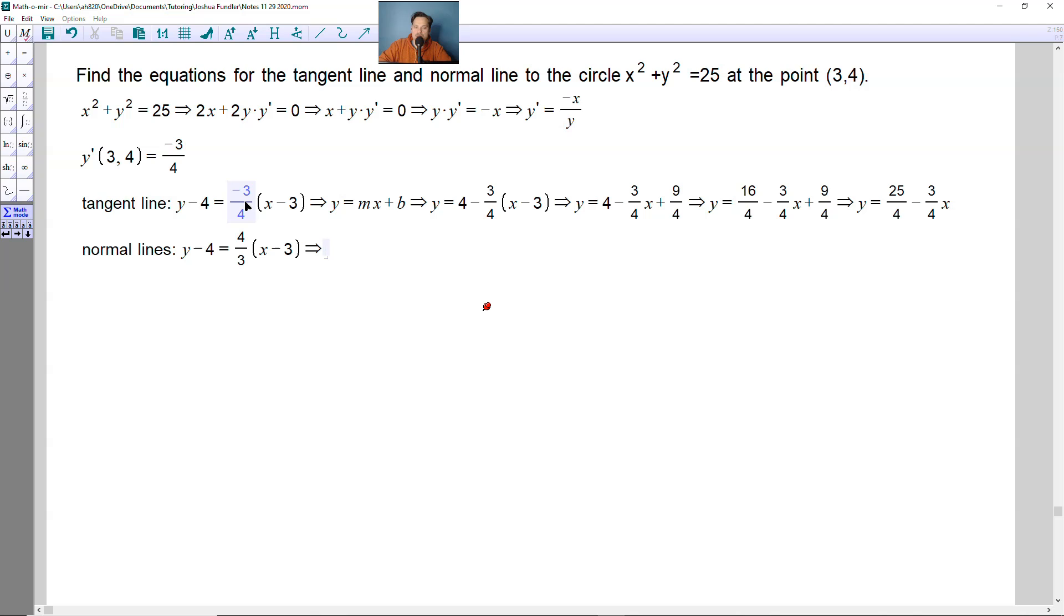Continuing, now you're going to have to distribute the 4 thirds everywhere. So it's going to be y minus 4 equals 4 thirds x. Then you have to be really careful to distribute the 4 thirds over to the negative 3. When you do that, it's going to look like minus, and then you have 4 thirds times 3.